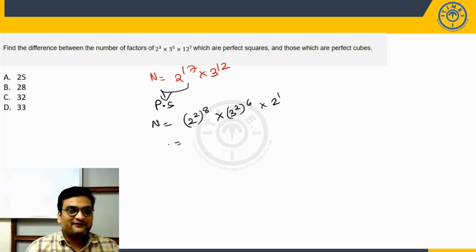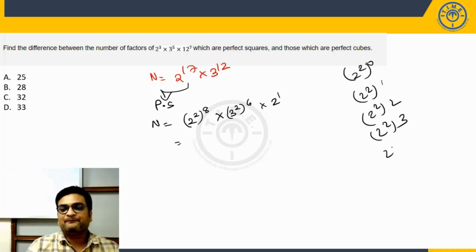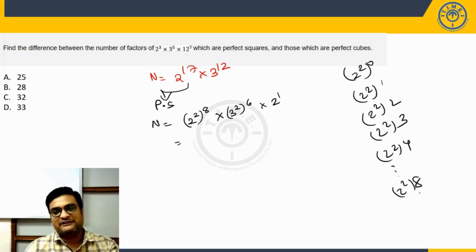So how many perfect square factors can we have, please look at it from this group. If you take any possibility, for example if you take 2 square whole power 0 or you take 2 square whole power 1 or you take 2 square whole power 2, whole power 3, whole power 4, whole power 8, any possibility that you take, it's definitely going to be a perfect square.